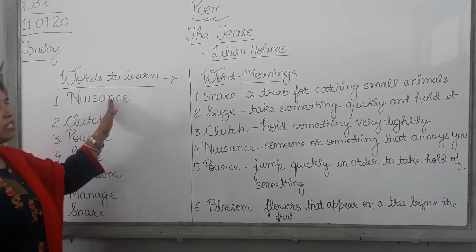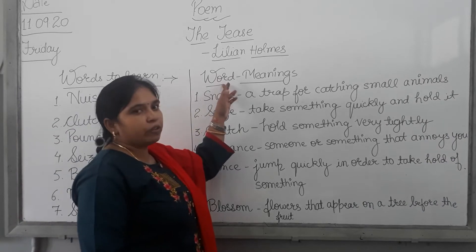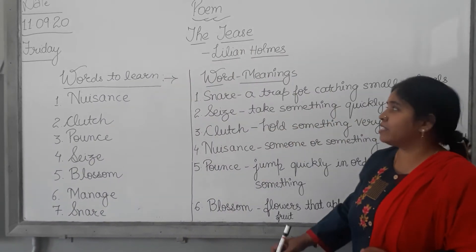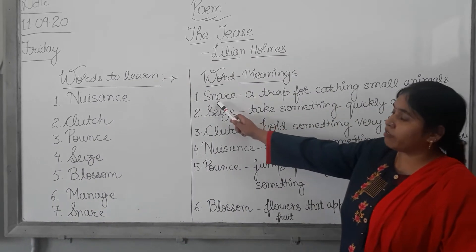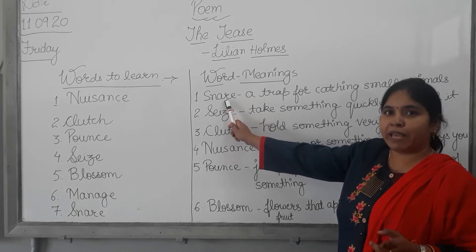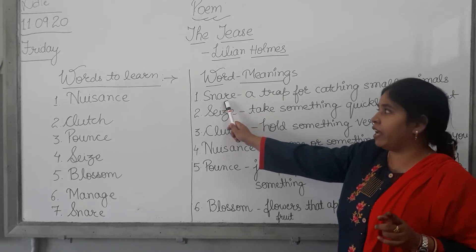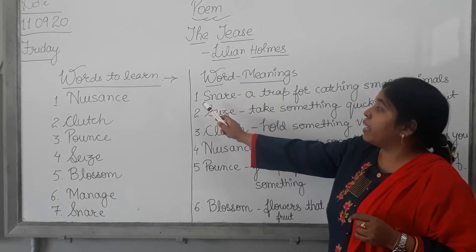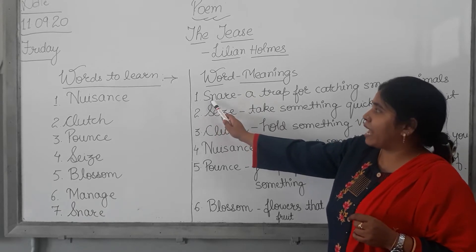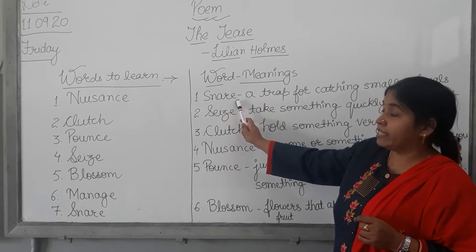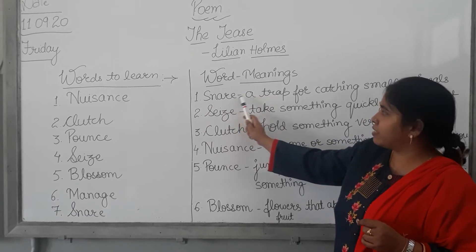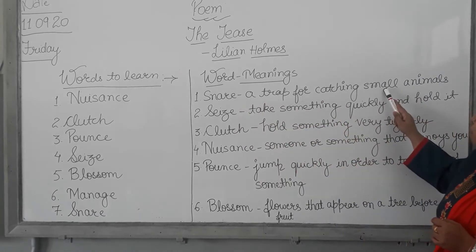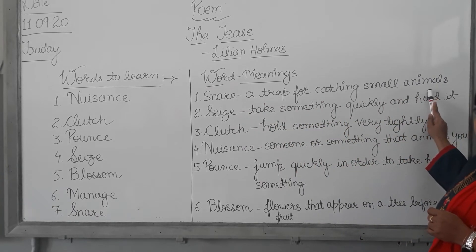After writing this, we will move further towards the word meanings of the poem 'The Trees'. Here also you will make the first letter capital. So be ready. The first word is S-N-A-R-E, snare. And the meaning of the word snare is: a trap for catching small animals.